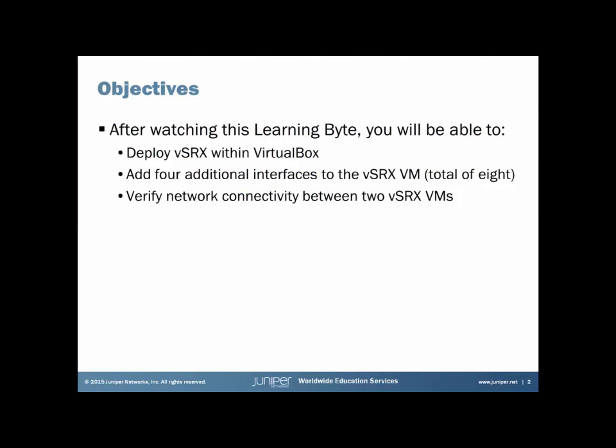Here are the objectives of this learning bite. First, I will show you how to deploy a VSRX image within VirtualBox. We will then spin that image up, make some changes, and create a master VSRX image from which to clone additional VSRX images. These changes include adding four additional interfaces via the command line for a total of eight and other additional configuration changes. After creating this master VSRX image, we'll create two VSRX clones, spin them up, and verify network connectivity between them.